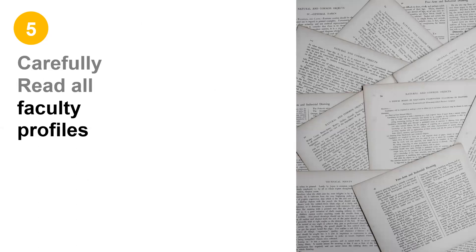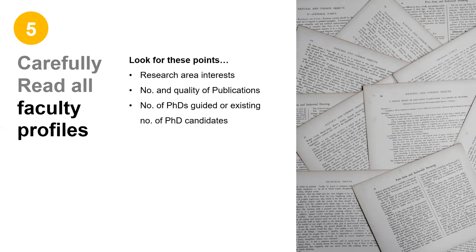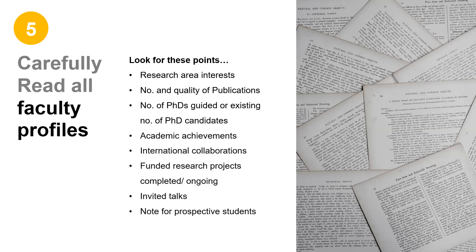Point number five. Dig deep into reading faculty profiles. In relation to your chosen broad area of research, try to find faculty who share a similar research interest. Look at their quality and quantity of publications, number of PhDs guided or existing number of PhD candidates. Look at their academic achievements, international collaborations, funded research projects, invited talks, or any note for prospective PhD students. Invest some time on this one.